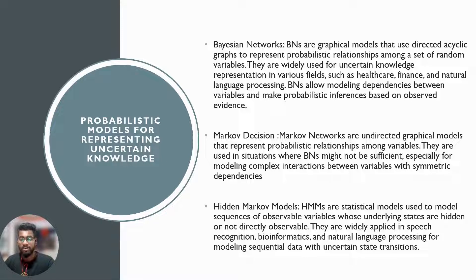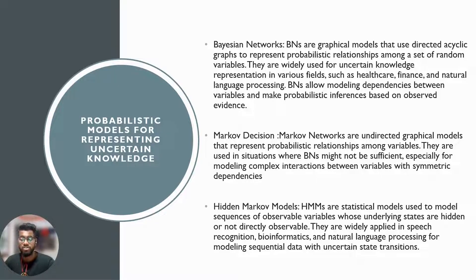Markov networks are undirected graphical models that represent probabilistic relationships between variables. They are used in situations where Bayesian networks might not be sufficient, especially for modeling complex interactions between variables with symmetric dependency. Hidden Markov Models, or HMMs, are statistical models used to model sequences of observable variables whose underlying states are hidden or not directly observable. They are widely applied in speech recognition, bioinformatics, and natural language processing for modeling sequential data with uncertain state transitions.